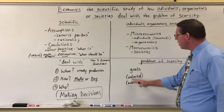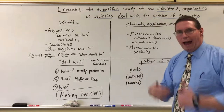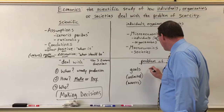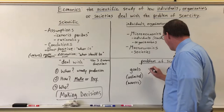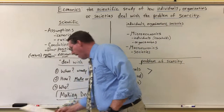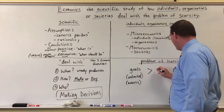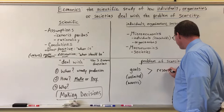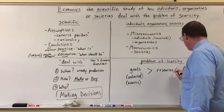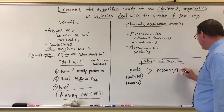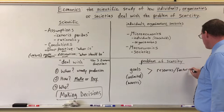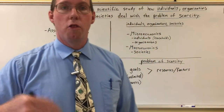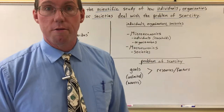Our wants, or our needs — the things that we want to accomplish or have for ourselves — are unlimited, which means they are much larger than the resources that we have, or what we call factors in economics.